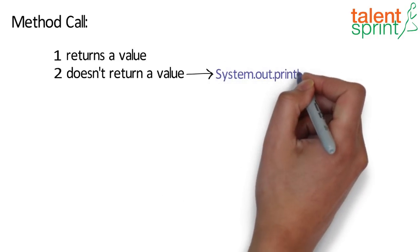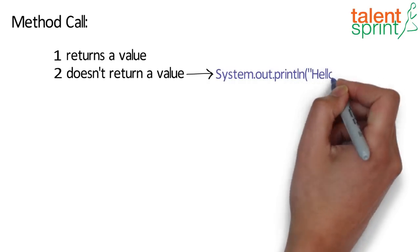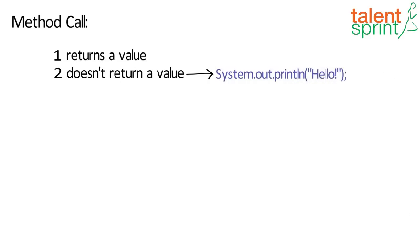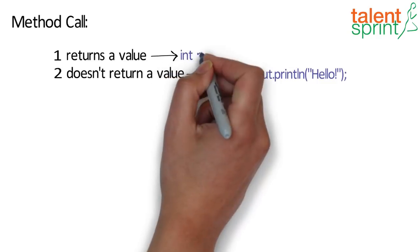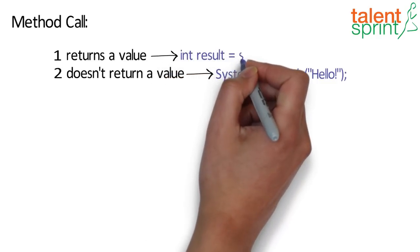And when your method returns a value, you can call it like this. So the result stores the value returned by the method sum.